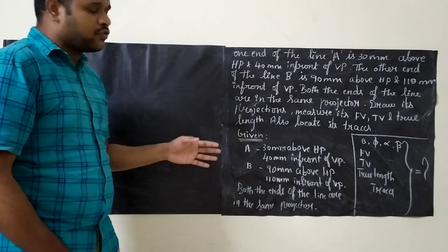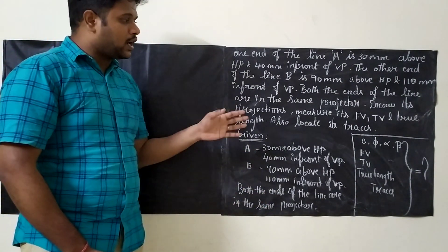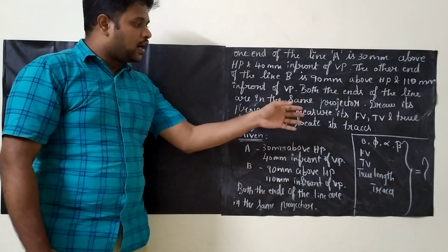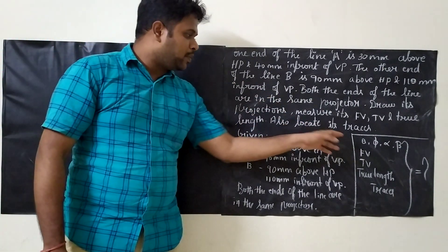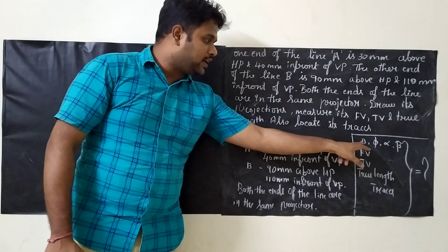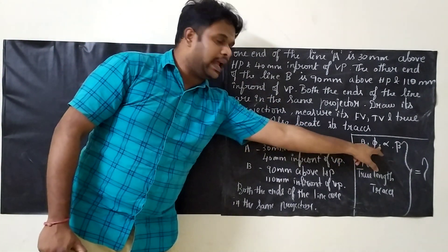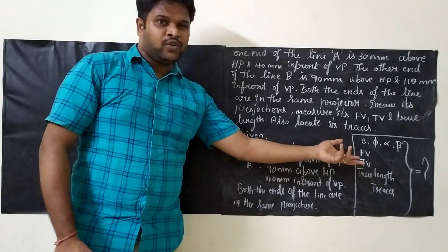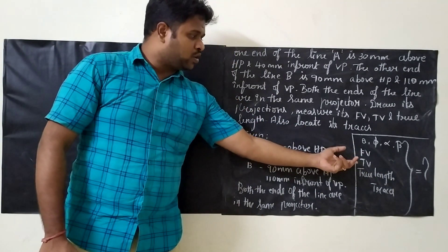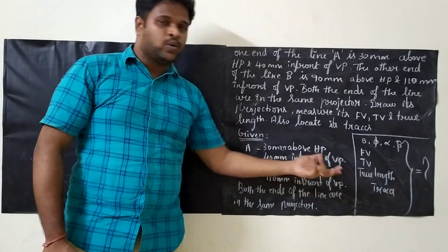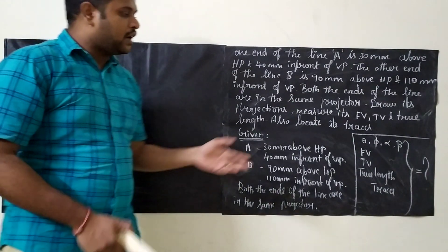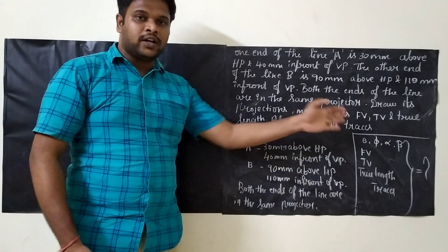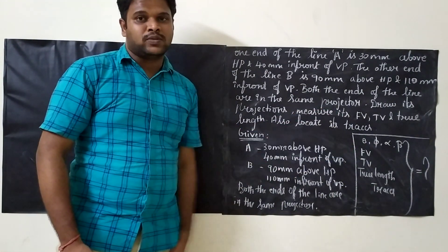Finally, what we are going to find is: we will be determining theta, phi, alpha, beta, front view length, top view length, true length, and also the traces.